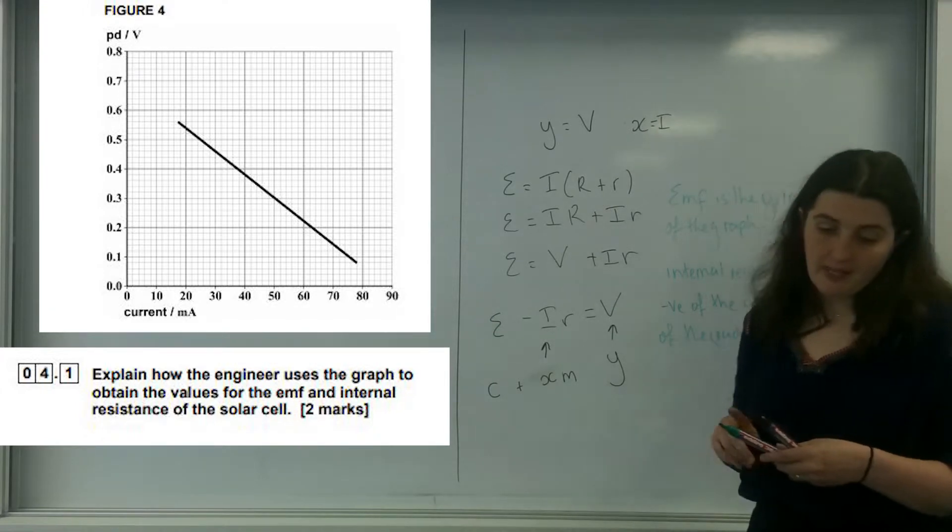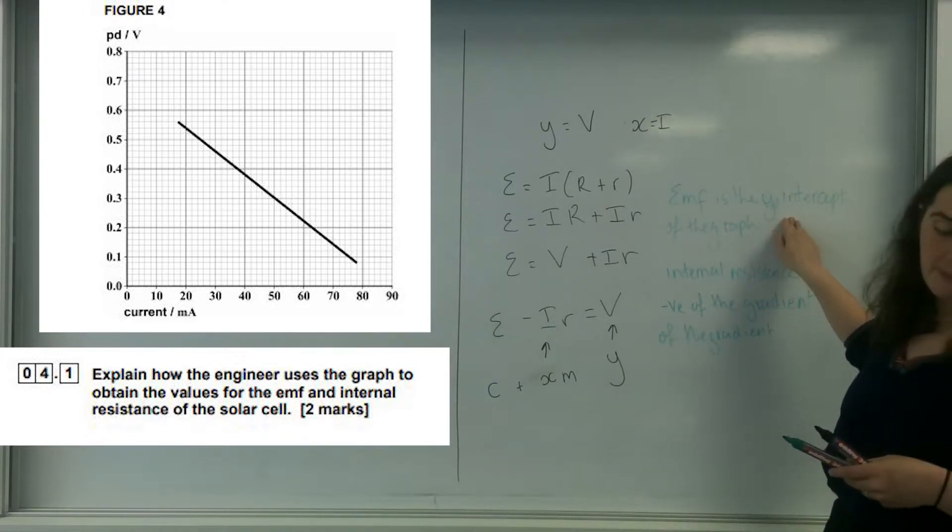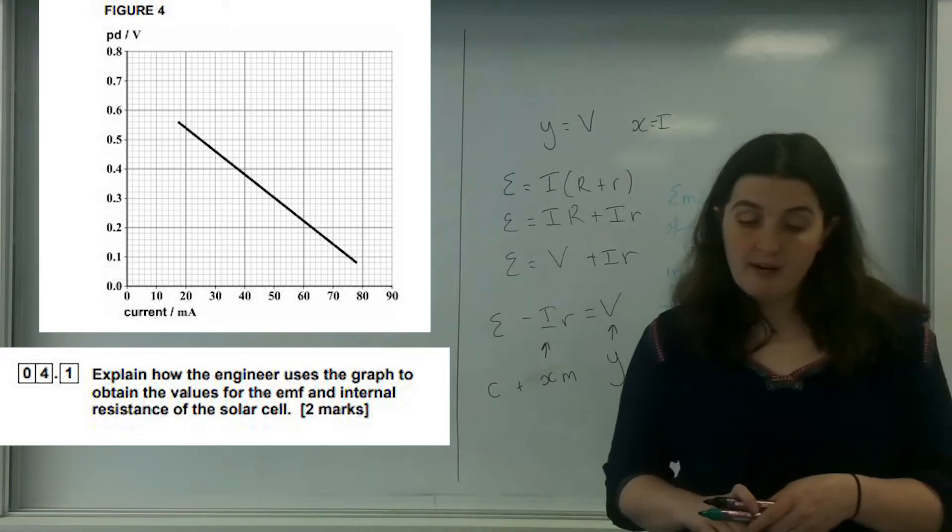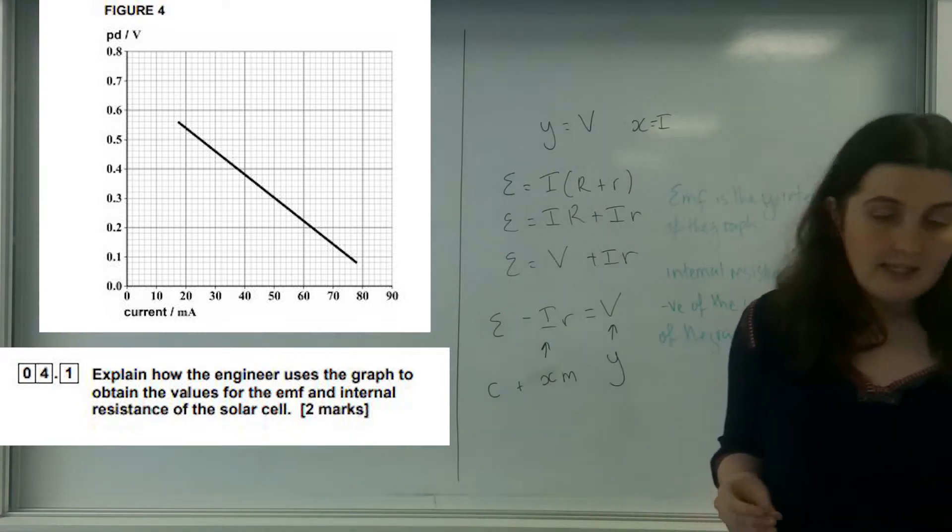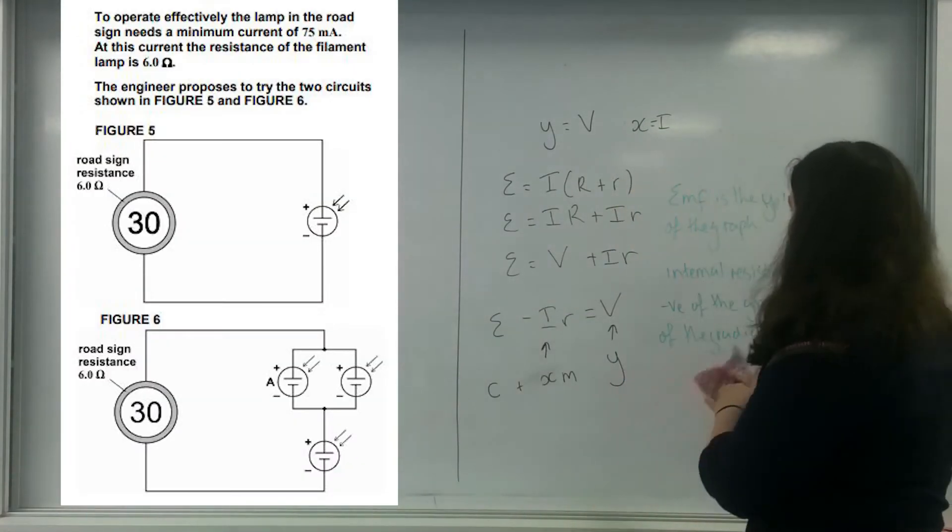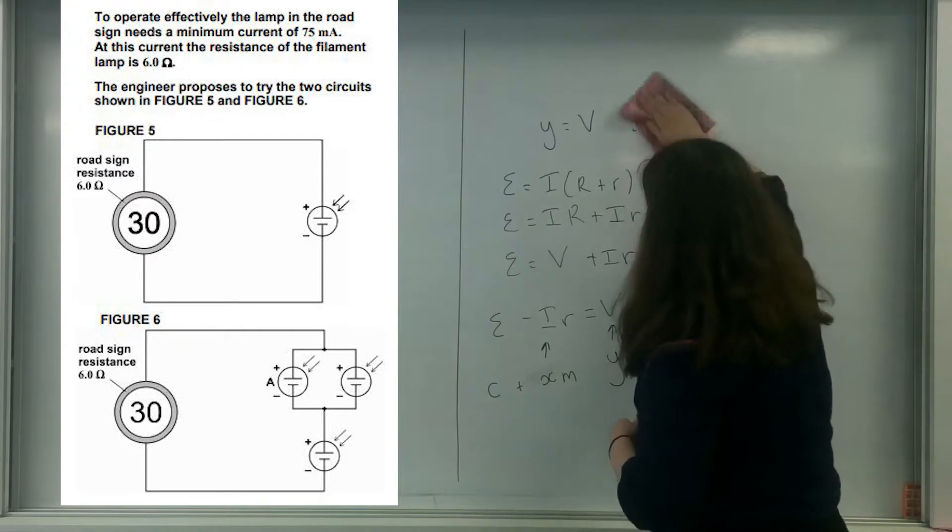What I've done here is I've explained how the EMF is found, and I've also justified my answer using this. Y equals mx plus c is powerful. If you've got an equation, write it underneath, and that will support you. For two marks, one mark: the EMF is the y-intercept of the graph, and the internal resistance is the negative of the gradient.